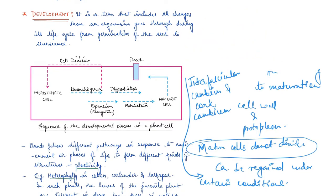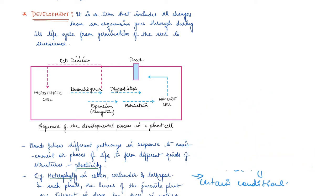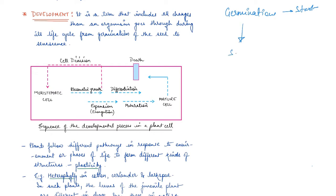Development basically includes all changes in the organism that occur during its life cycle. In the case of plants, development starts from germination of the seed to the senescence of the plant. This entire phase is nothing but development. We can also see a diagrammatic representation of the sequence.